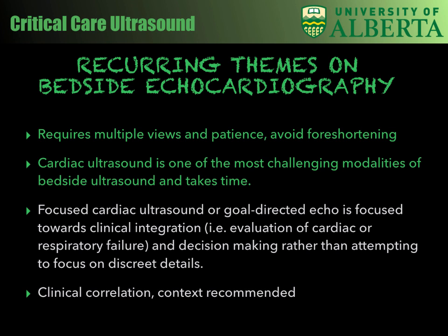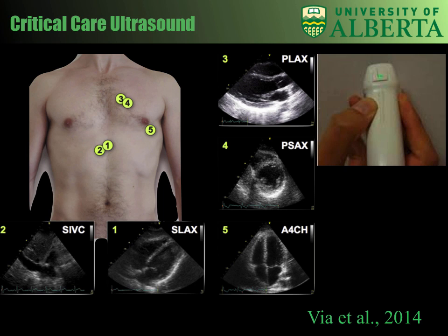Any clinical correlation, like integrating bedside clinical findings and historical items, are important to consider. We'll start off by highlighting some key views, as we've previously discussed. At points 3 and 4 on the parasternal, generally around the 3rd or 4th intercostal space, we can see the parasternal long axis view displayed in image 3. In image 4, with the probe rotated towards the marker towards the left shoulder, we can see the short axis view.